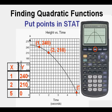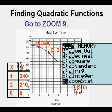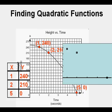And then we're going to press the zoom, 9 choice. And we see that our three points now appear in graph form.